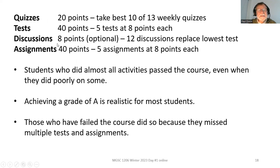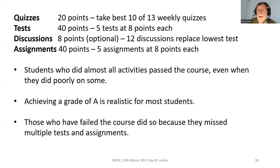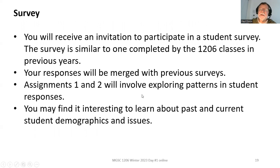So the grade breakdown: quizzes 20 points, tests 40 points, discussions 8 points (optional to replace your lowest test), and assignments 40 points. In the past, students who did almost all the activities passed the course even when they did poorly on some of them. If you do all of them, getting an A is a very realistic objective — even for students who are not good at math. There are 35 tasks altogether; they're small and students say the workload is manageable, but you've got to keep on top of things and manage your time. You'll have things due Wednesdays, Fridays, and Saturdays.